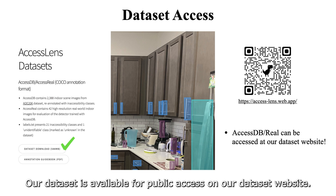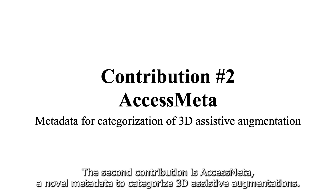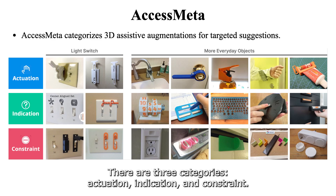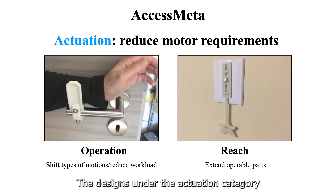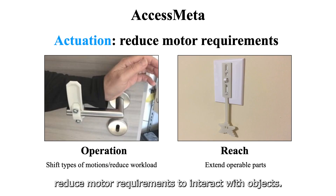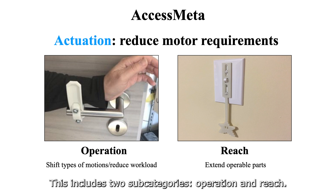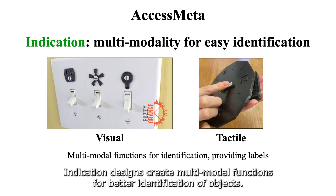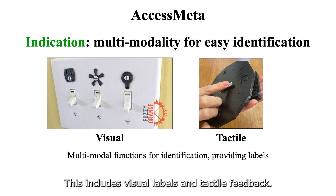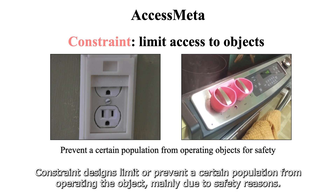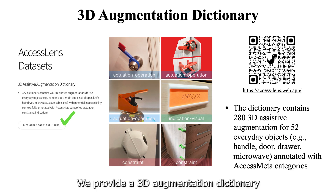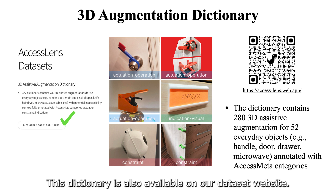Our dataset is available for public access on our dataset website. The second contribution is XS Meta, a novel metadata taxonomy to categorize 3D assistive augmentations. There are three categories: actuation, indication, and constraint. The designs under the actuation category reduce motor requirements to interact with objects, including two subcategories: operation and reach. Indication designs create multi-modal functions for better identification of objects, including visual labels and tactile feedback. Constraint designs limit or prevent certain populations from operating the object, mainly due to safety reasons. We provide a 3D augmentation dictionary fully annotated with XS Meta categories, also available on our dataset website.